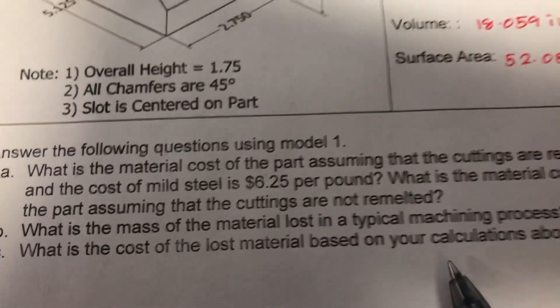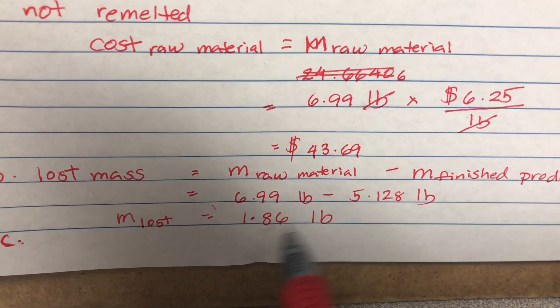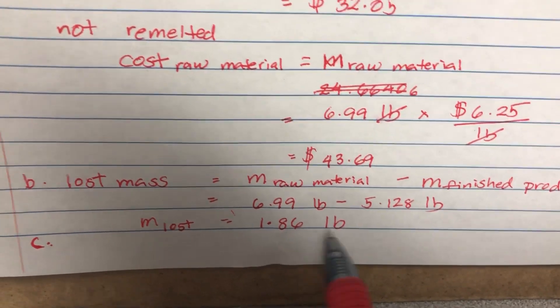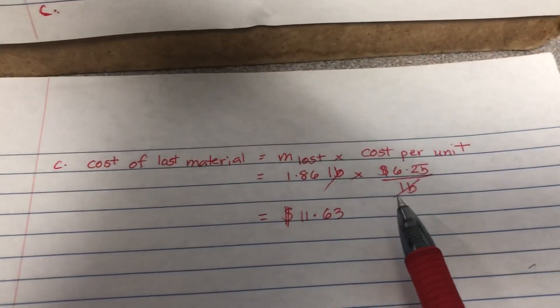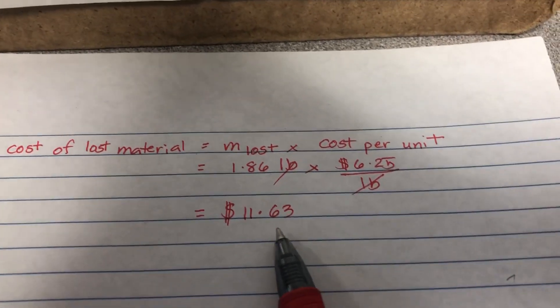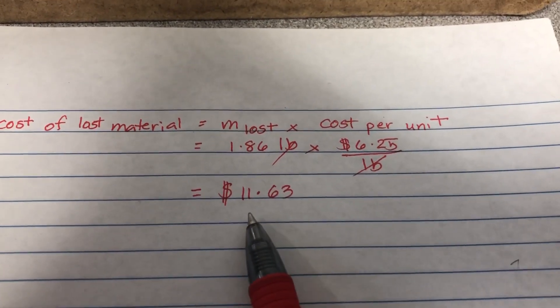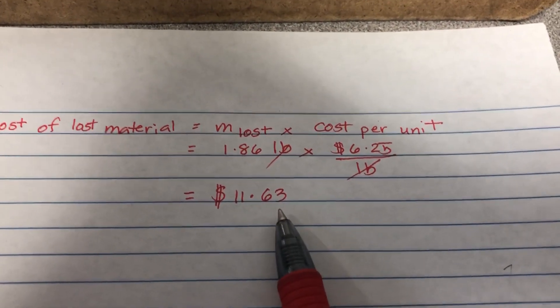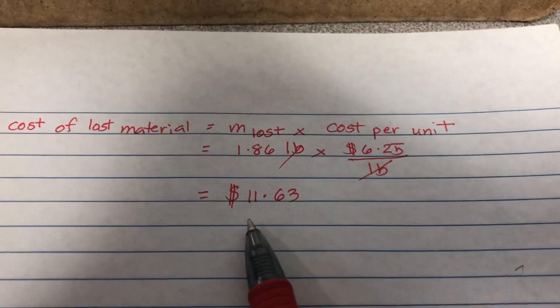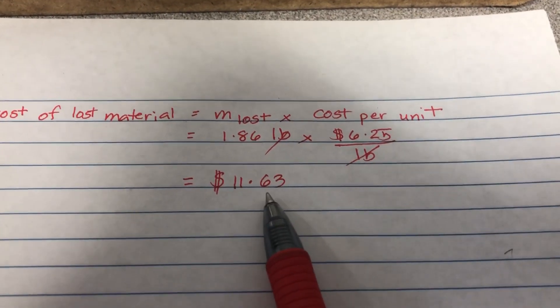Last question: What is the cost of the lost material? We take the lost mass of 1.86 pounds, multiply by $6.25, and get $11.63. So if we are not going to recycle the cuttings, that's $11.63 being wasted. But if we do recycle, that cost is not added to the cost of producing the part.